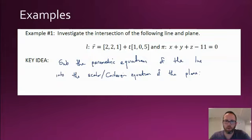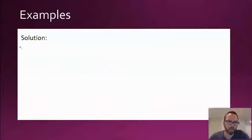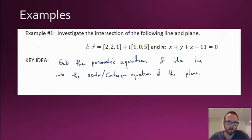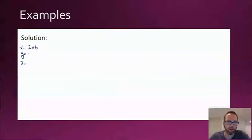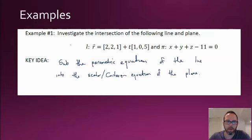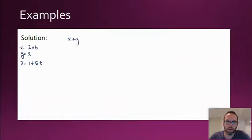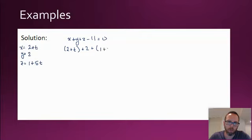Let's try that with this one. I'll write out my three parametric equations: X equals two plus T, Y equals two plus zero·T or just two, and Z equals one plus five T. My plane is X plus Y plus Z minus 11 equals zero. Let's sub those in: we get (two plus T) plus two plus (one plus five T) minus 11 equals zero. This is just a linear equation in T and we just have to solve for it.